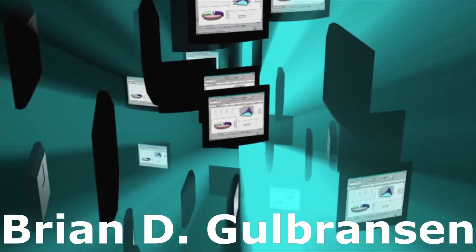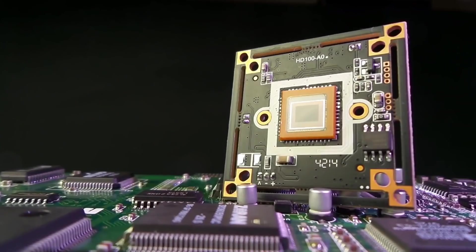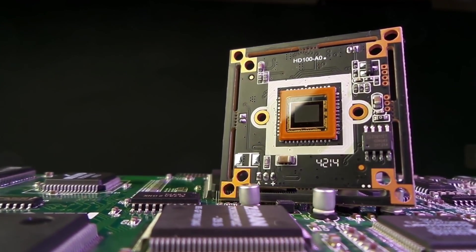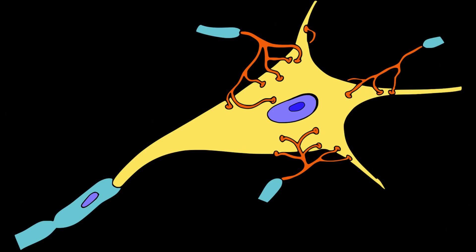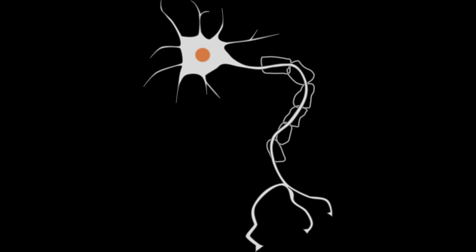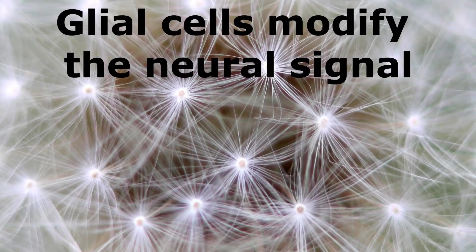According to Brian D. Gulbranson, thinking of this second brain as a computer, the glia are the chips working in the periphery. They are an active part of the signaling network, but not like neurons. The glia are modulating or modifying the signal.